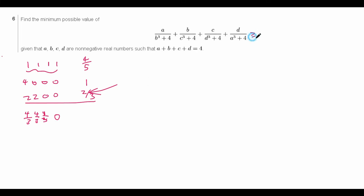So we want to prove that 2 thirds is the minimum possible value, with equality case 2, 2, 0, 0. The first thing we might think when solving problems like these with a fraction adding up to something greater than a constant is Cauchy-Schwarz — in particular Cauchy-Schwarz in Engel form, also known as T2's Lemma. But we find that if we try T2's Lemma, it doesn't seem to preserve our equality case; it naturally gives A equals B equals C equals D equals 1. So that might not be the best idea here.